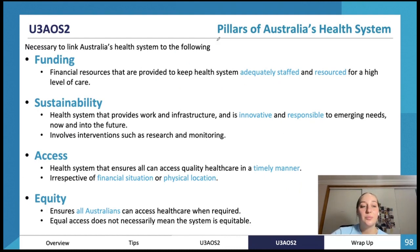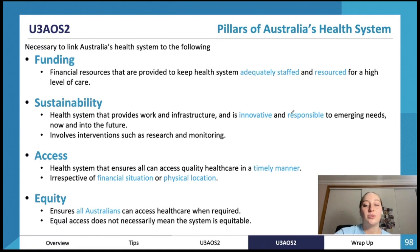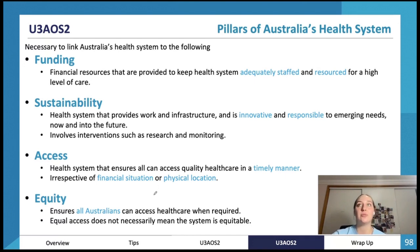Looking across all parts of Australia's health system — Medicare, private health insurance, the PBS, and NDIS — we need to know how they're funded, how they promote sustainability, how they promote access, and how they promote equity. Funding is how it's paid for. Sustainability means being innovative and responsive to emerging needs now and in the future. Access means people can actually receive the benefits. Equity means helping those who need it most as a priority.